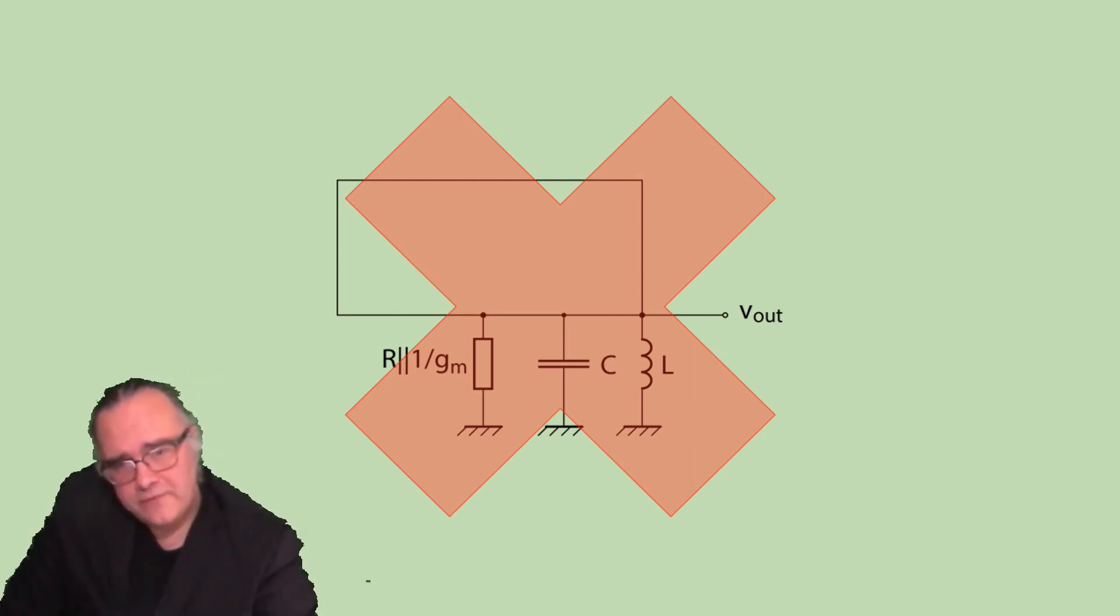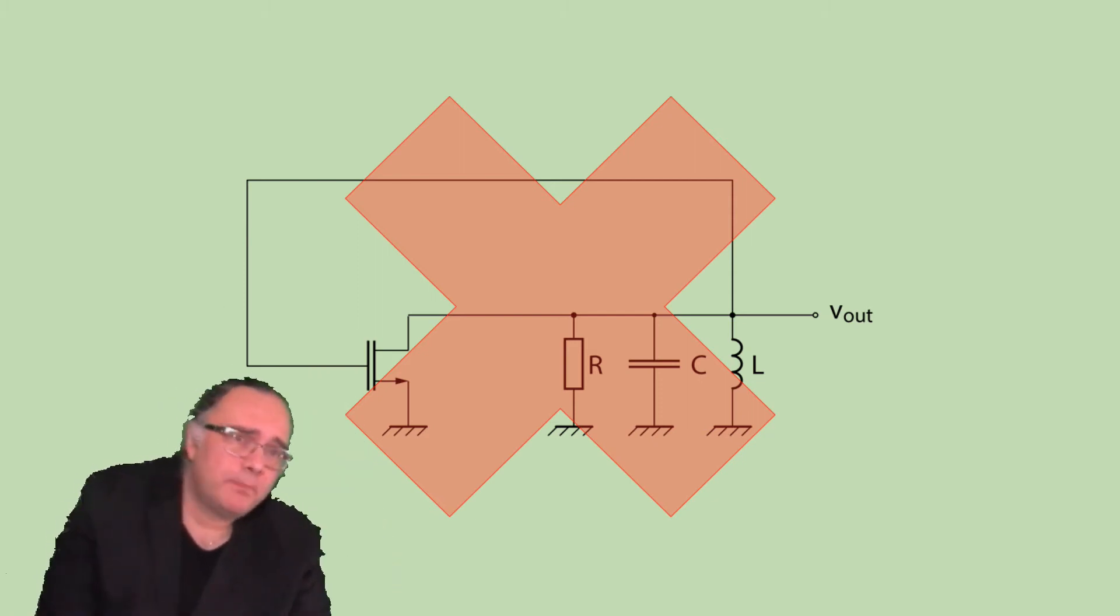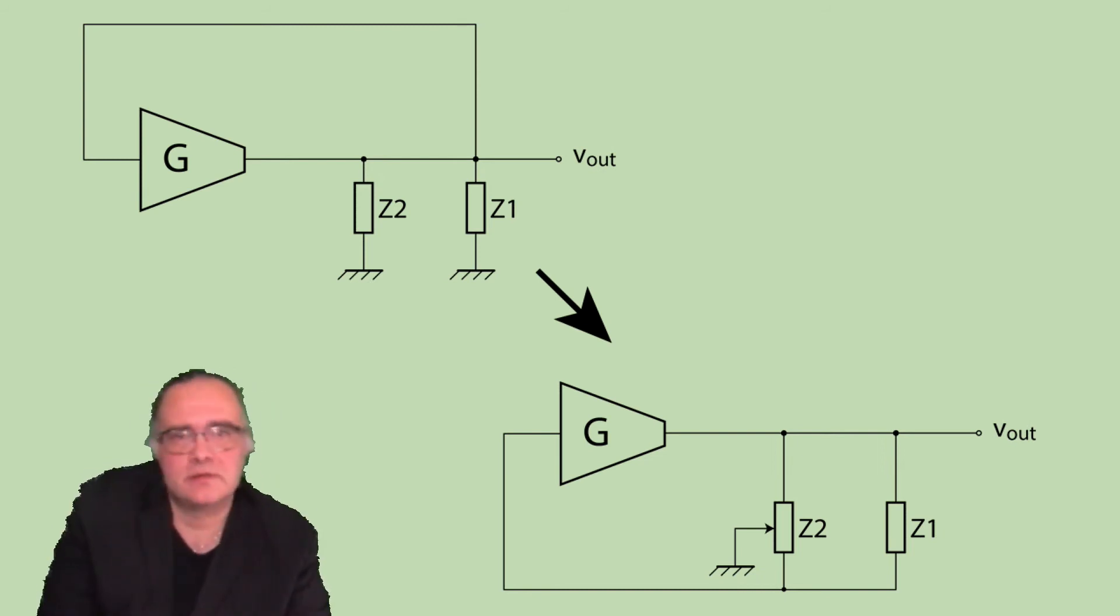Now we have to find a way to take the input for the transconductance block from another place. So the LC tank has two terminals, the top and the bottom. The problem is at the bottom we put ground there. But ground is a reference node. We can arbitrarily choose which node in our circuit to define as ground to refer our signals to this ground.